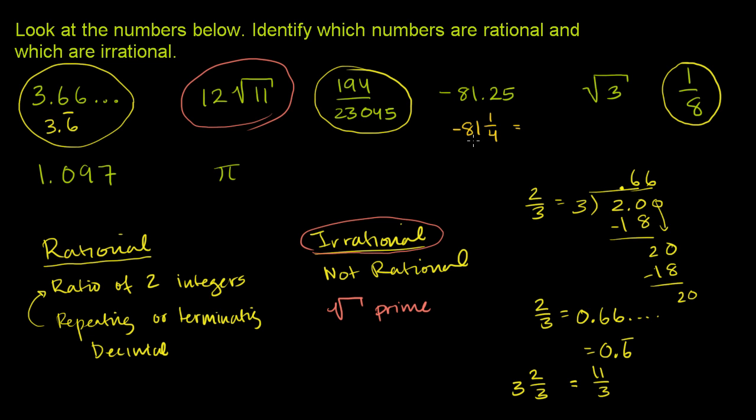4 times negative 81. 4 times 81 is 324. So it's negative 324 and then another negative 1. So it's negative 325 over 4.